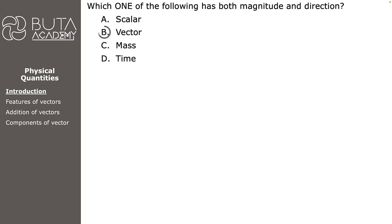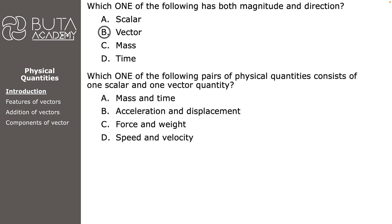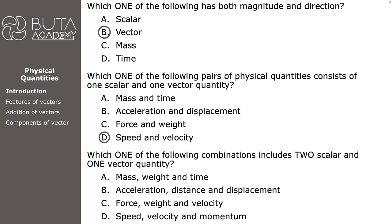Second question: which one of the following pairs of physical quantities consists of one scalar and one vector quantity? A — mass and time, B — acceleration and displacement, C — force and weight, D — speed and velocity. Mass and time in option A are both scalar quantities. Acceleration and displacement in option B are both vector quantities. The same can be said about force and weight in option C. In option D we have speed as a scalar and velocity as a vector, so D is our answer.